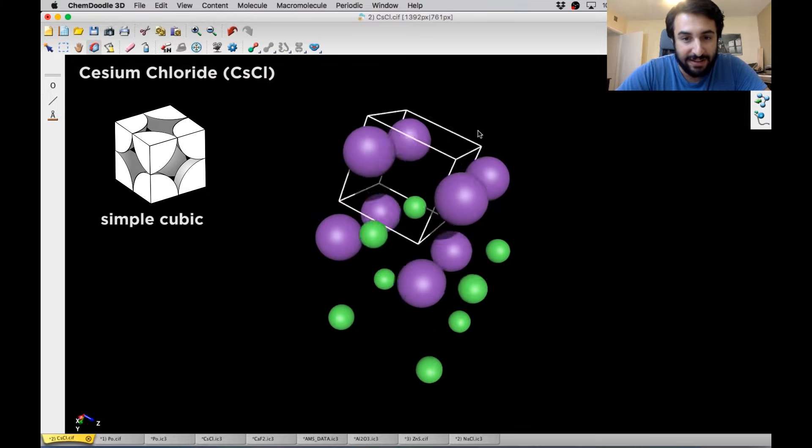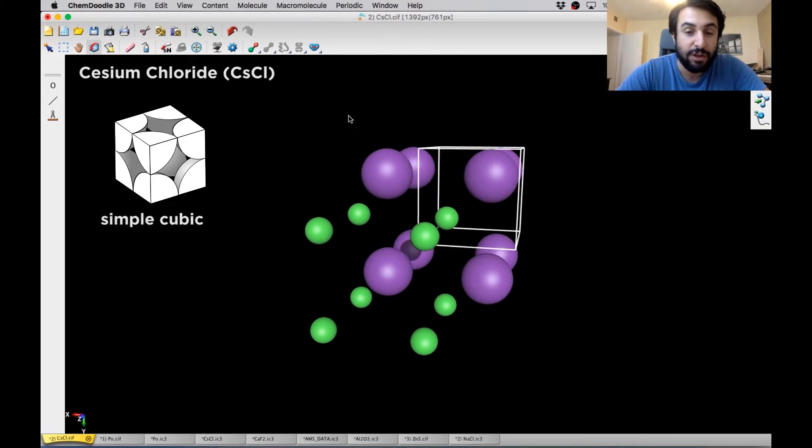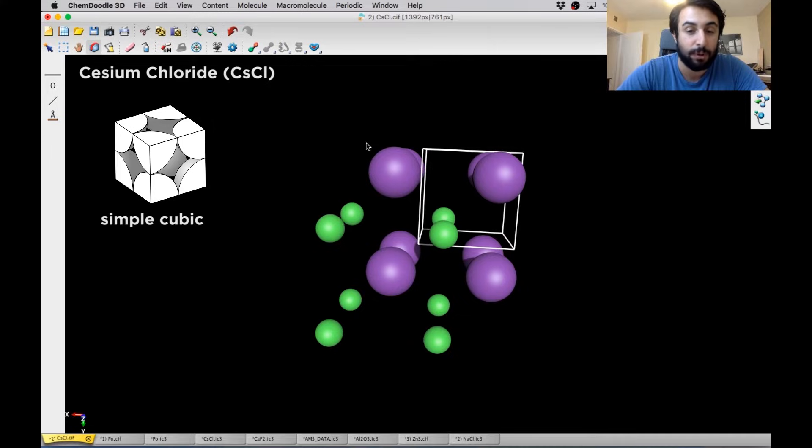So here we can see that this is a simple cubic structure. And the interesting thing is you can consider it a simple cubic structure with either of the elements. So we could consider the cesium ions as forming the simple cubic structure and the chloride ions occupying the cubic holes. Or we could flip it and we could say that the chloride ions are forming a simple cubic structure and the cesium ions are filling the cubic holes. Either way, it's the same thing.